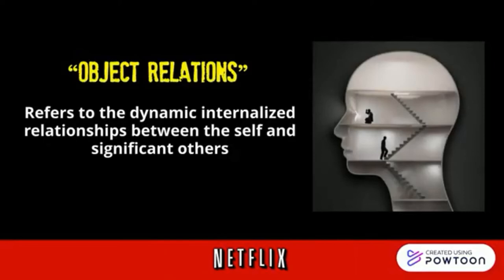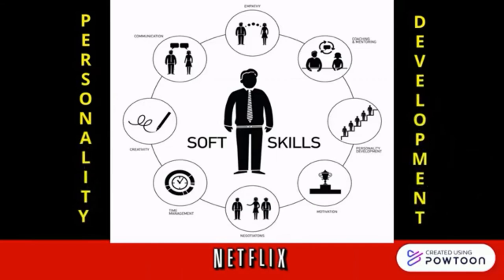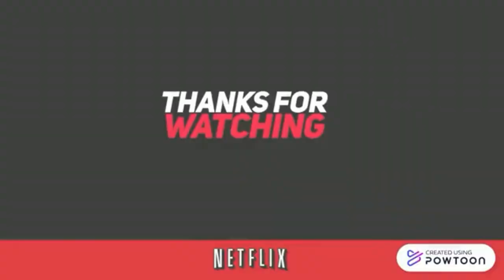The term object relations refers to the dynamic internalized relationship between the self and significant others. An object, usually a person or thing, is focused on relational needs in human development. An object relation involves mental representation — first, the object as perceived by the self. Object relations theories stress the importance of early family interactions, primarily the mother-infant relationship, in personality development. It is believed that infants form mental representations of themselves in relation to others, and that these internal images significantly influence interpersonal relationships later in life. Self-psychology helps provide a clearer and more comprehensive understanding of narcissism, allowing it to be seen as a natural part of development.